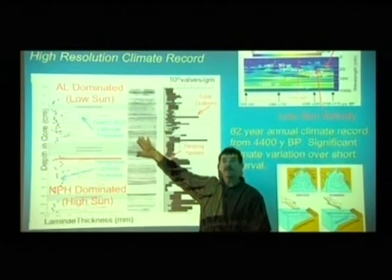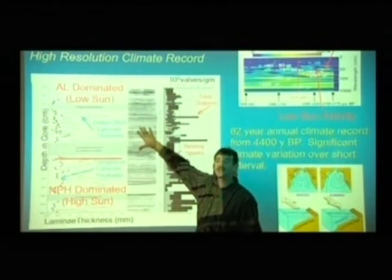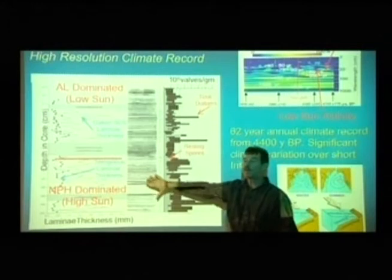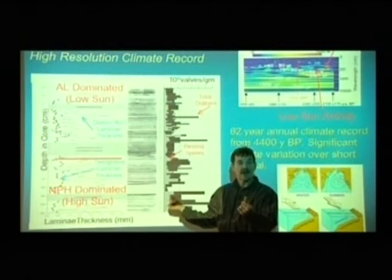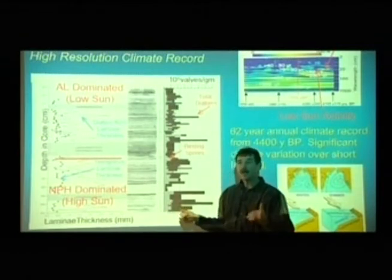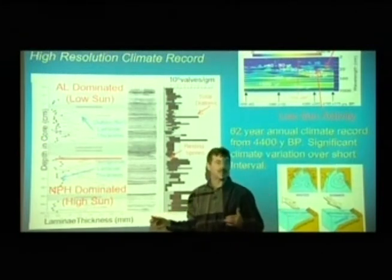We see these darker, thinner layers. The diatom production is greatly reduced now. And now it's a lot of these darker, muddy layers from enhanced rain. The Aleutian low is starting to dominate at this point as opposed to the upwelling that was going on with the North Pacific high. And this occurred like that.